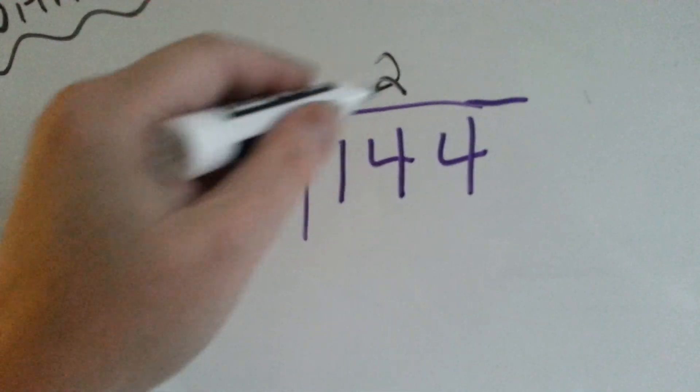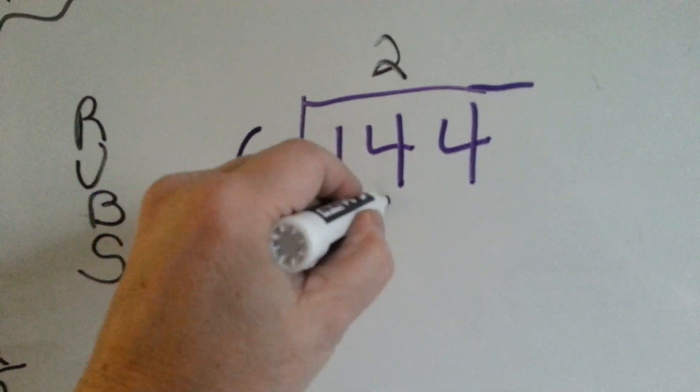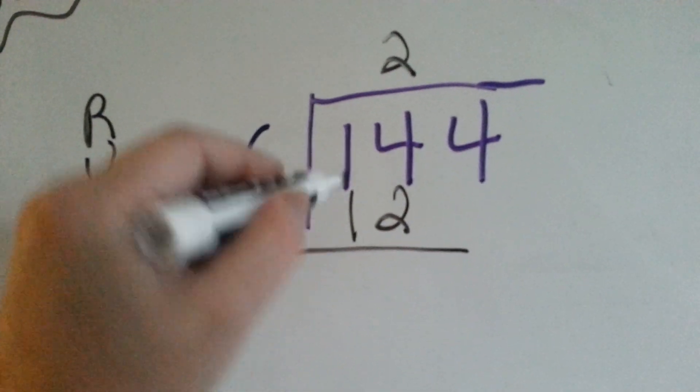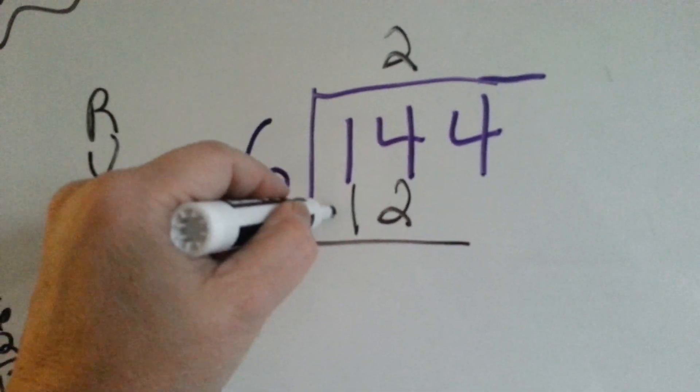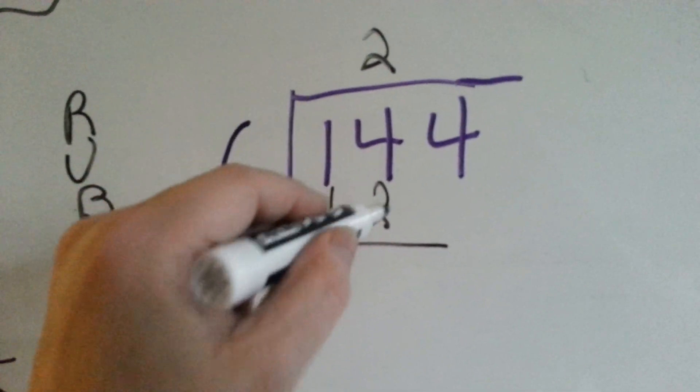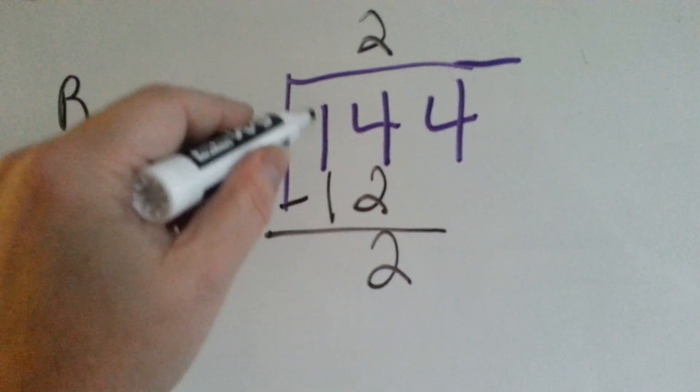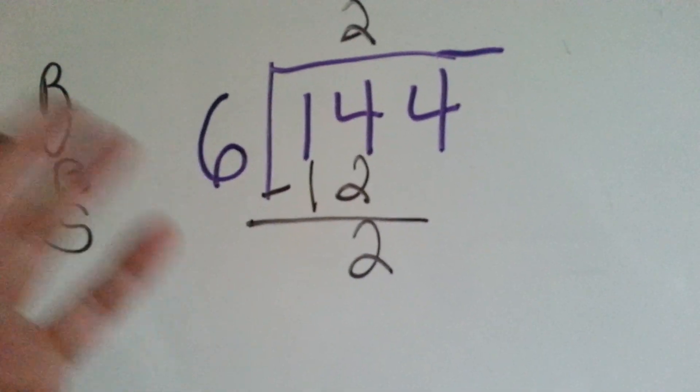We do our multiplication. 6 times 2 is 12. We put it below here and we subtract. 4 take away 2 is 2. 1 take away 1 is nothing, so we just leave it.